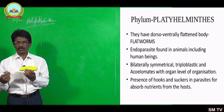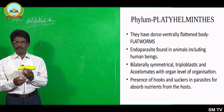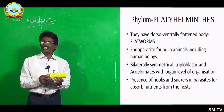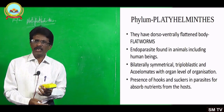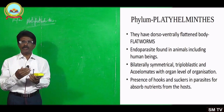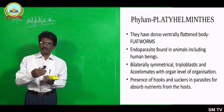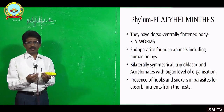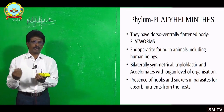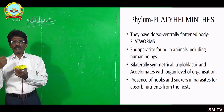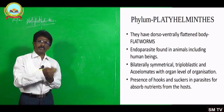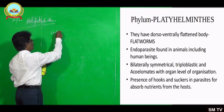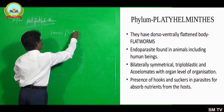They are bilaterally symmetrical, triploblastic, and acoelomate animals with organ level of organization. These are the first group of animals having organ level of organization — before this group, we have seen only tissue level of organization. Most of them are parasites. To lead the parasitic life, they have some peculiar structures — hooks and suckers.